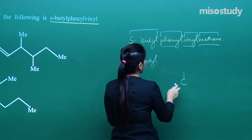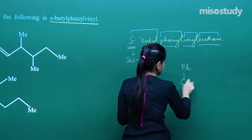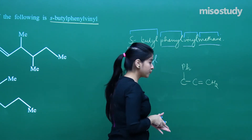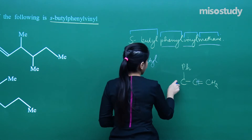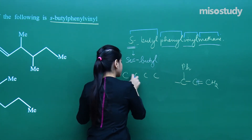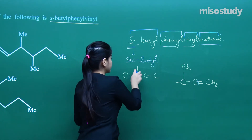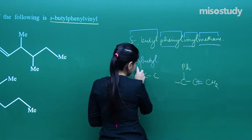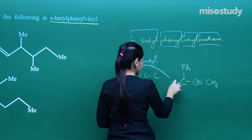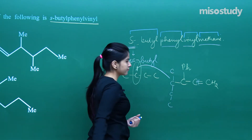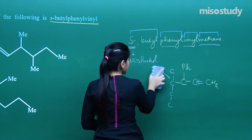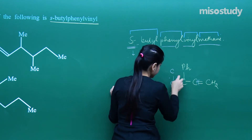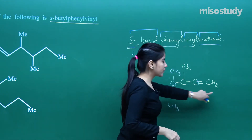It would be sec-butyl first of all, and phenyl — so 'Ph' for phenyl — and vinyl is something like this. That is vinyl. And I need sec-butyl — a butyl group with one free valency on to the secondary carbon atom. So that is how we need to join this very carbon, and that is how the structure is.